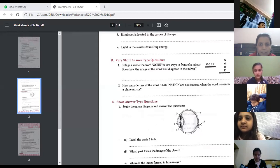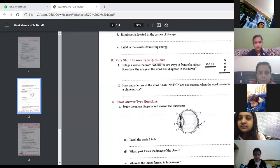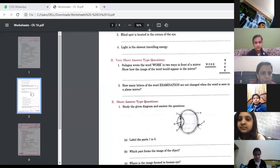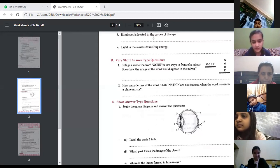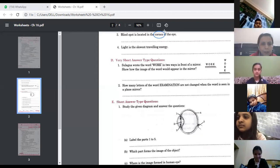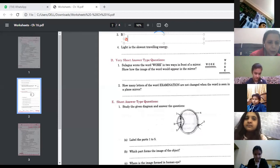Next is number three, blind spot is located in the cornea of the eye. Is it true? Ma'am no. Where is it located? Ma'am, on the junction of the optic nerve. Yes, kindly write down. Instead of cornea, at the junction of retina.